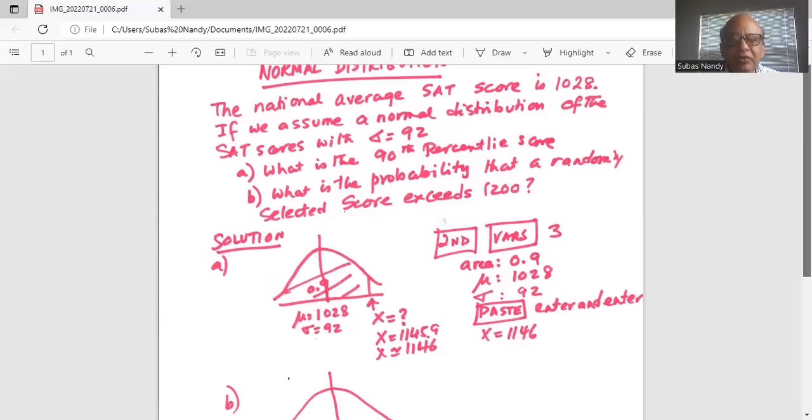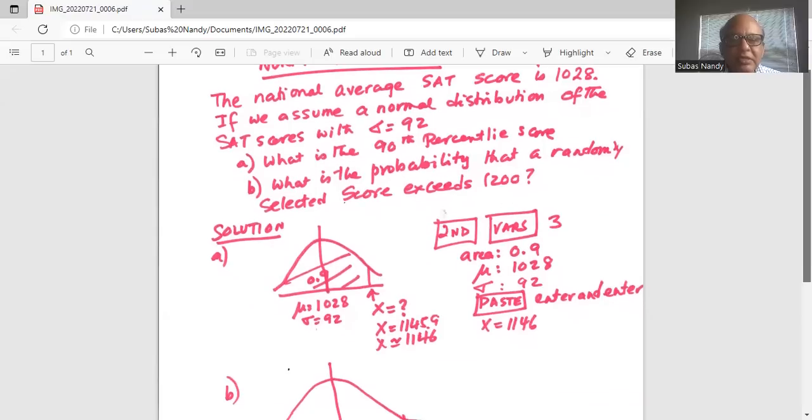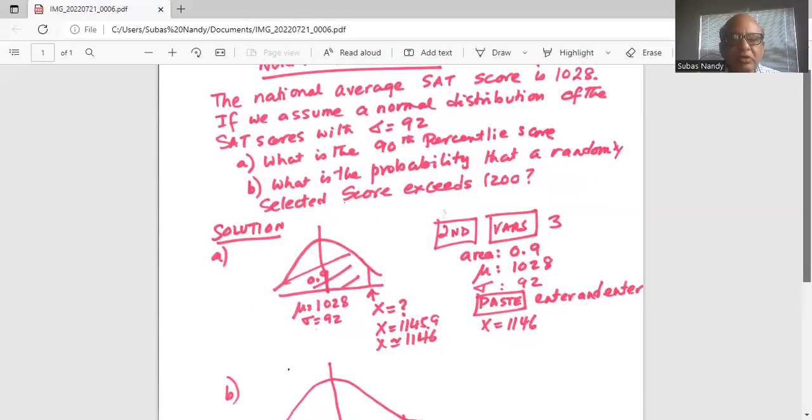So, TI-84, press the second key, then the VARS key, then number three, which is invNorm. Area, we always print the area below the unknown X score, which is 0.9. Mu, mean is 1028, sigma is 92. Scroll down to PASTE, bring your cursor on PASTE, and hit enter and enter.